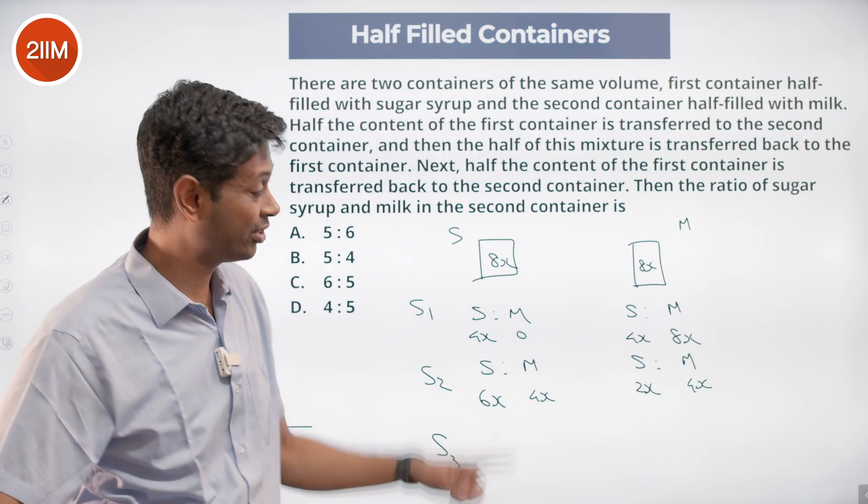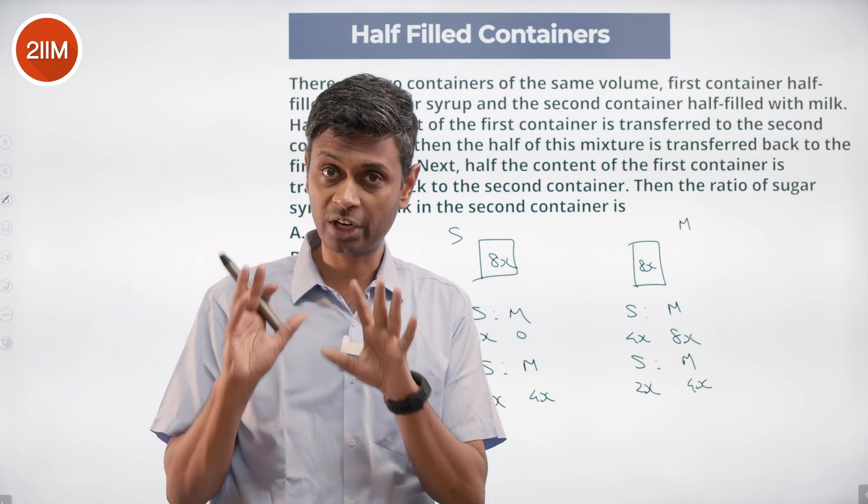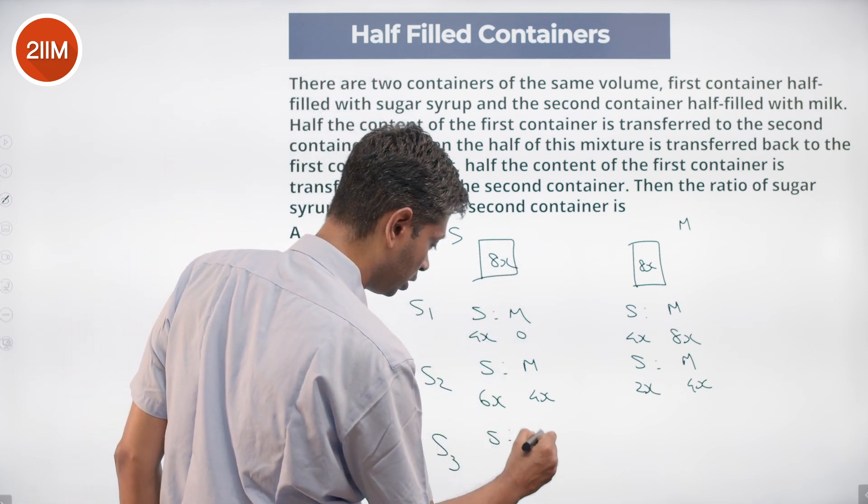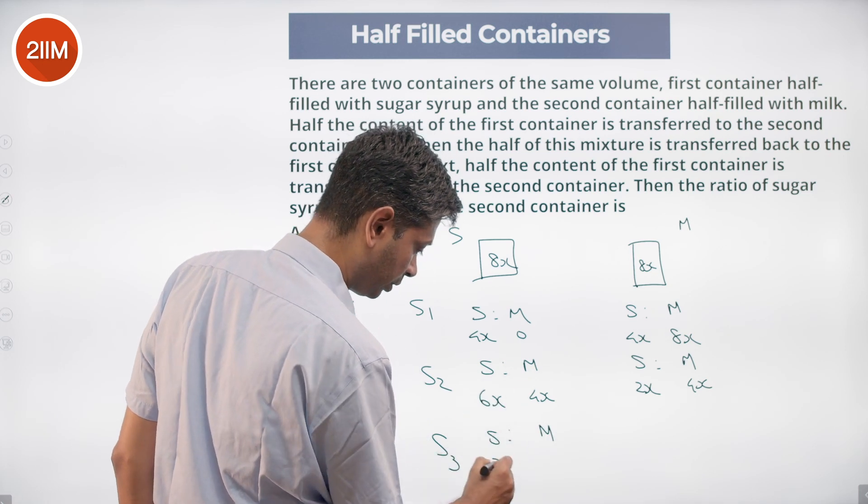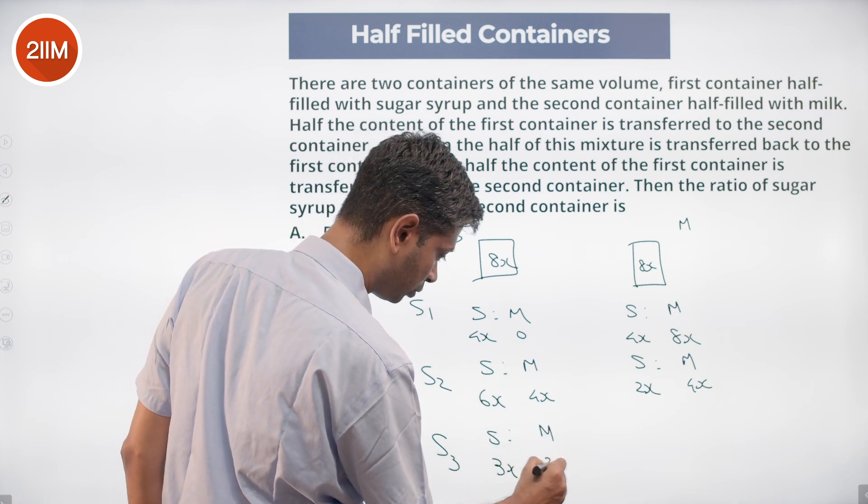That's what we start with, one round of check, all good. Now what do we do? We send from here to there. 6x will become 3x, 4x will become 2x.